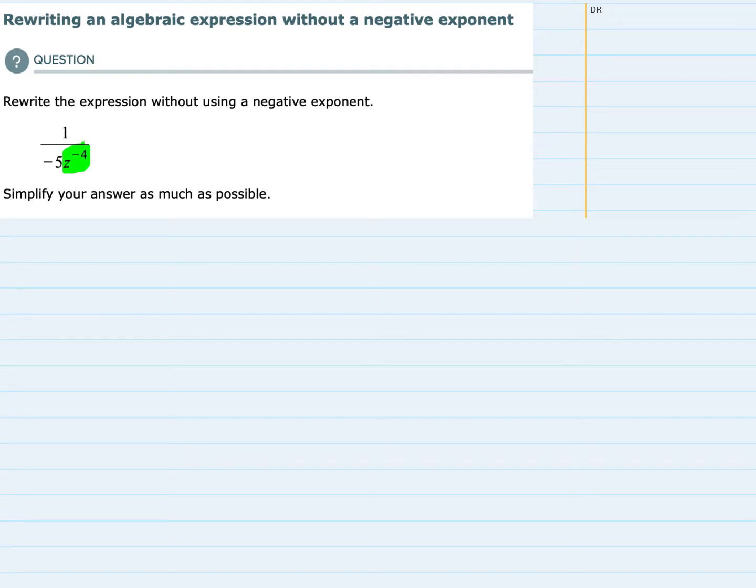So we can rewrite this, leaving the 1 and the negative 5 where they are. Notice there's no problem with negative numbers. The negative 5 doesn't need to be changed. We're only getting rid of negative exponents.